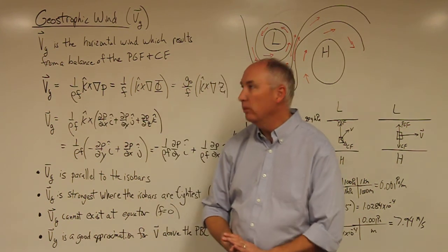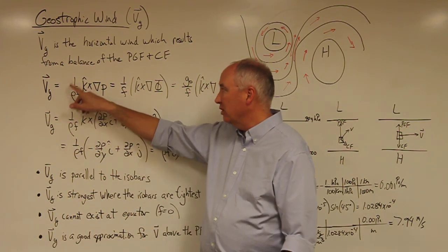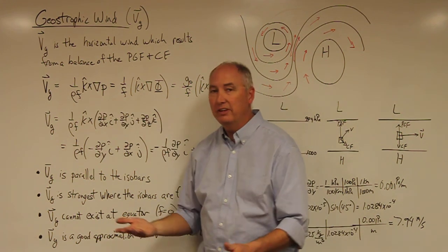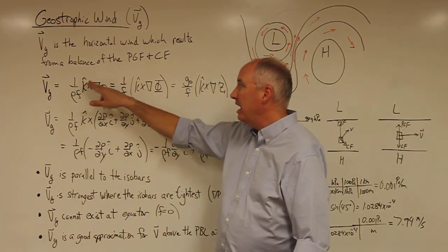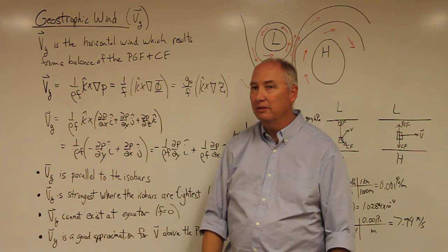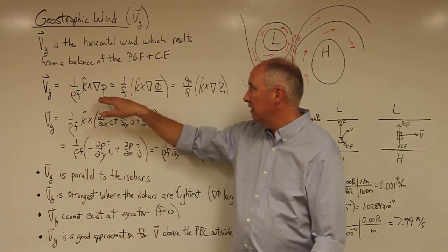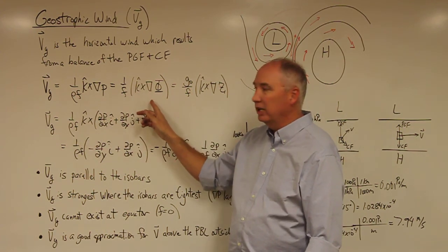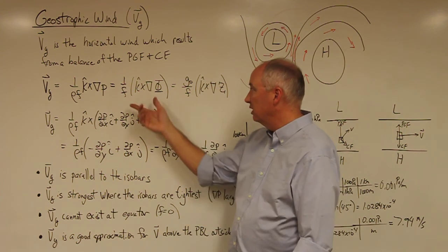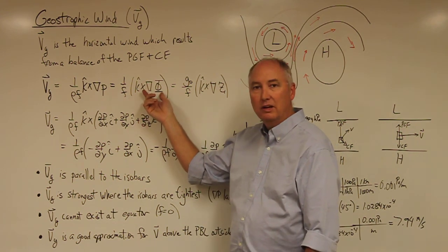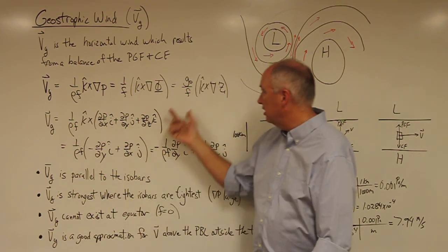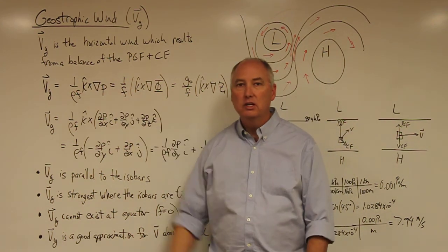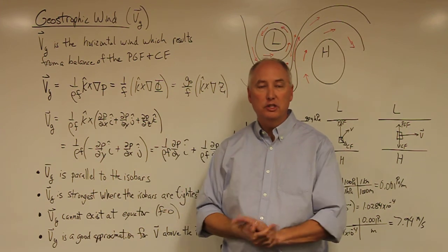Mathematically, the geostrophic wind is given as 1 over density times the Coriolis parameter — which is 2 omega sin phi, where phi is latitude — times k-hat cross the gradient of pressure. The gradient of pressure can be transformed into an expression showing the geostrophic wind in terms of the gradient of the geopotential and in terms of the gradient of the geopotential height. So we now have three different ways to describe the geostrophic wind.